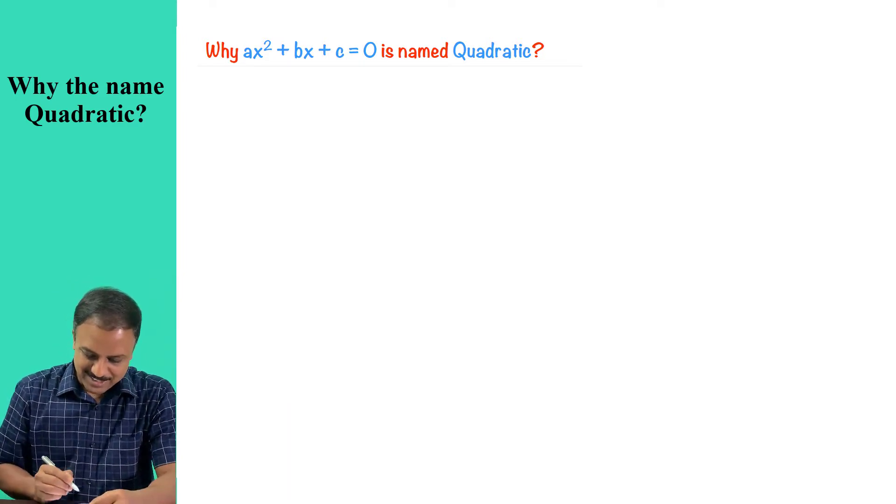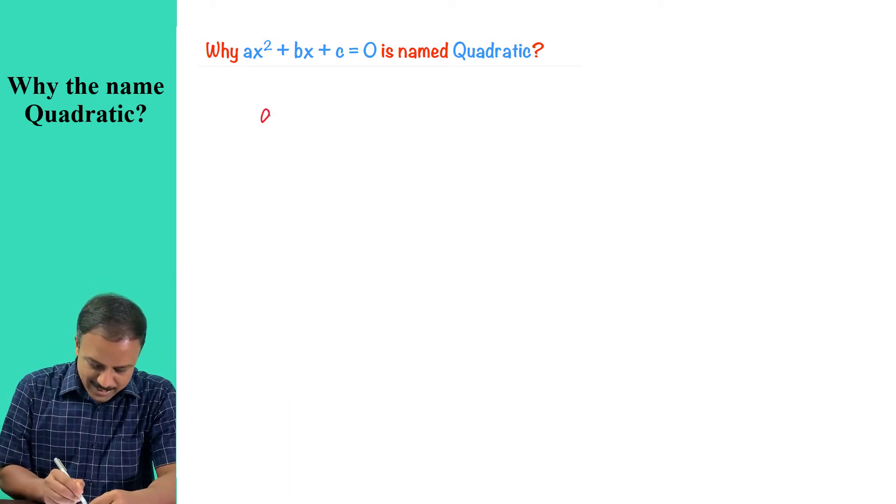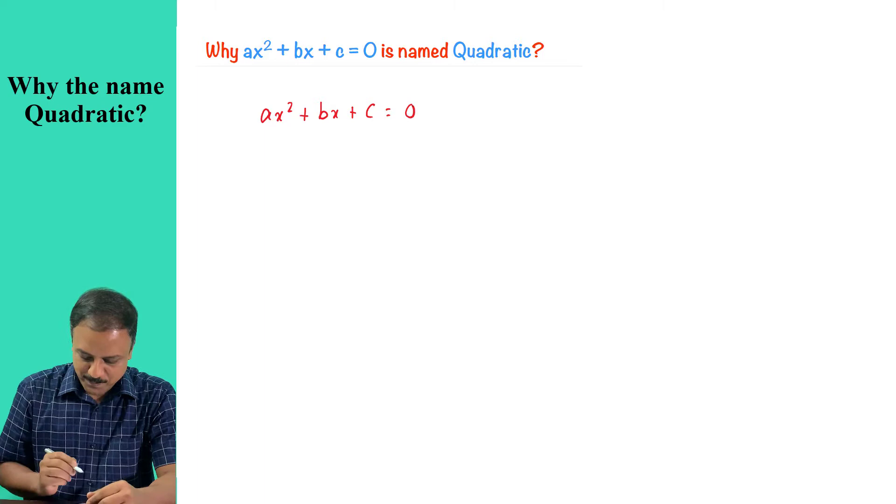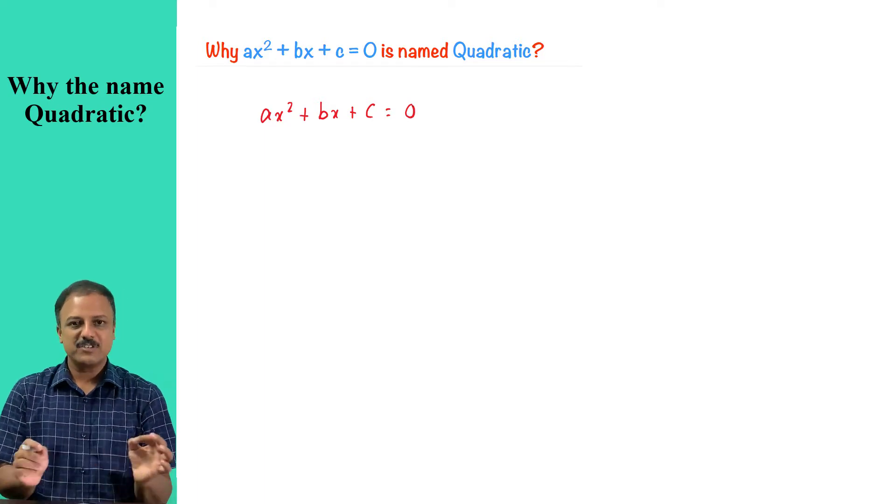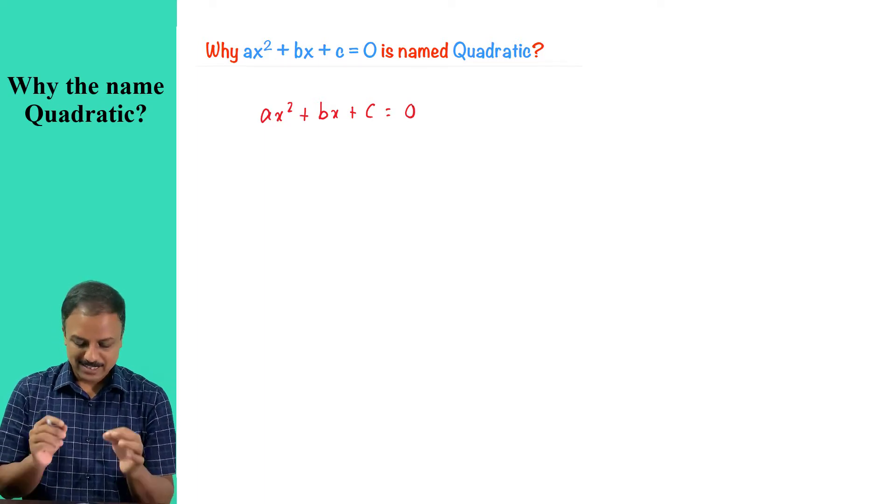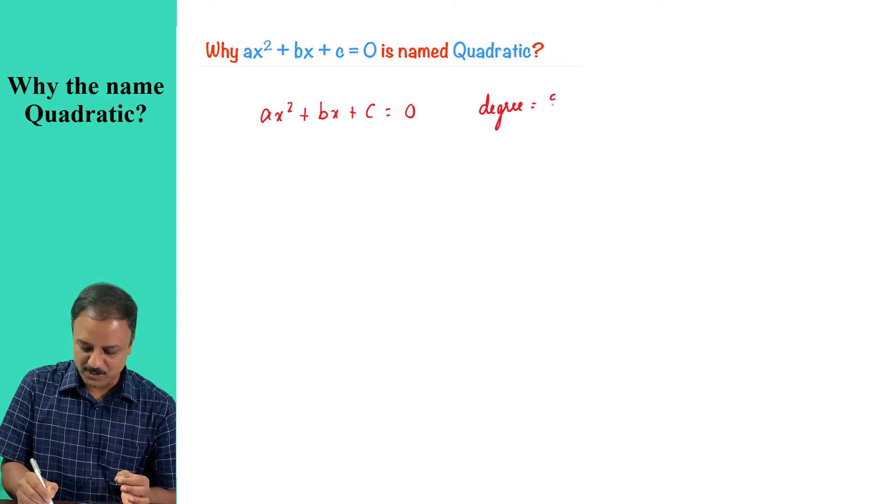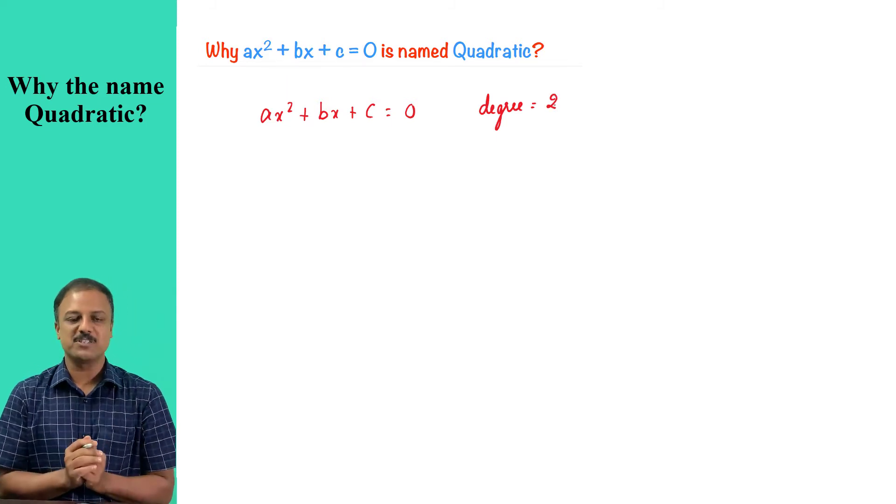Now let's look at the reason here. When I say ax squared plus bx plus c equals zero, if you look at the degree of the equation, you can see the degree of this equation as two. So you know how to calculate the degree of the equation. The degree of this equation is two.